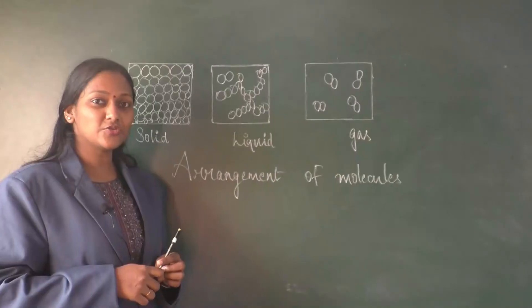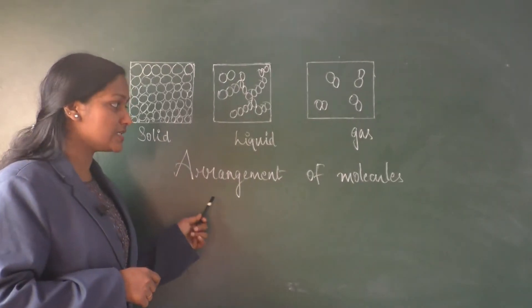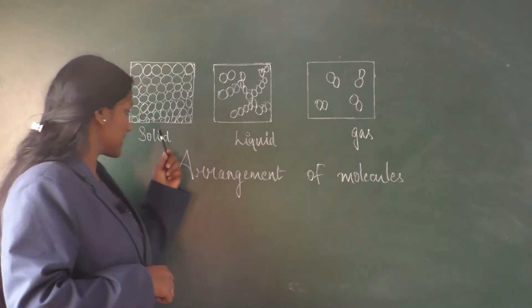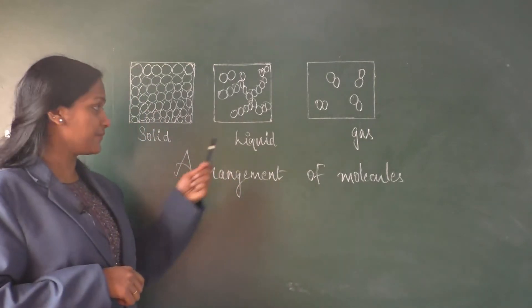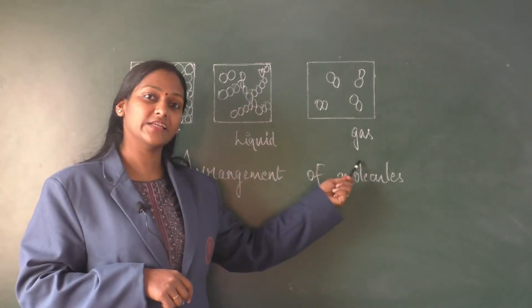Matter is made up of tiny microscopic particles called molecules, and further molecules are made up of atoms. Now we will see the arrangement of molecules in solid, liquid, and gas.